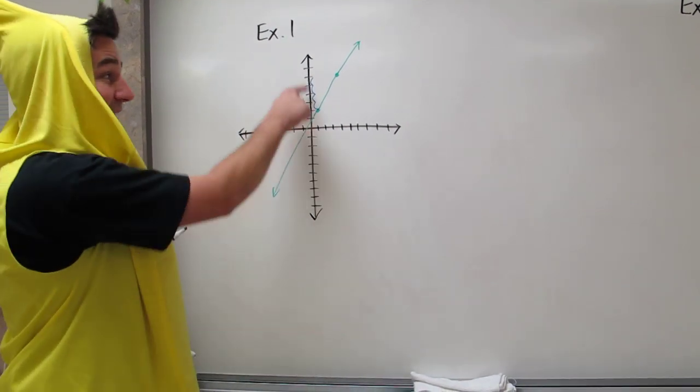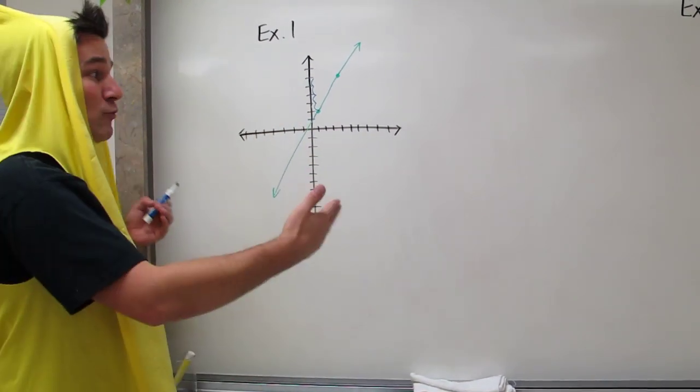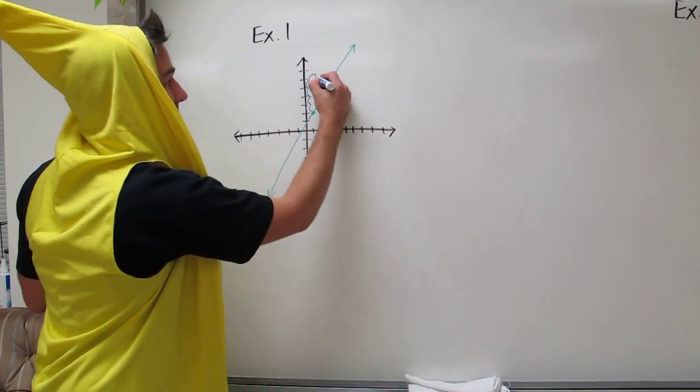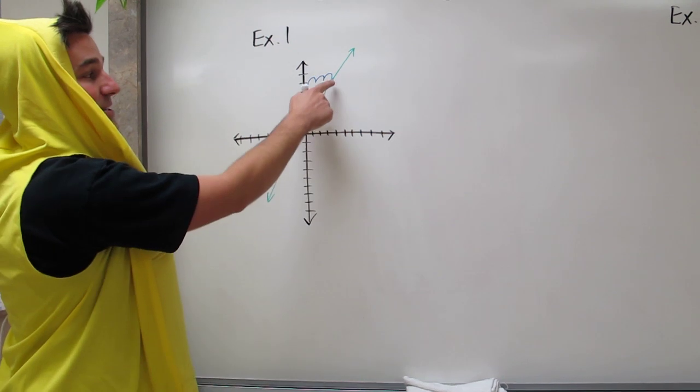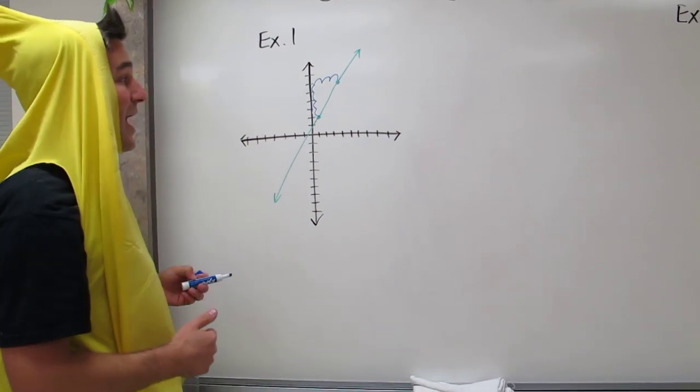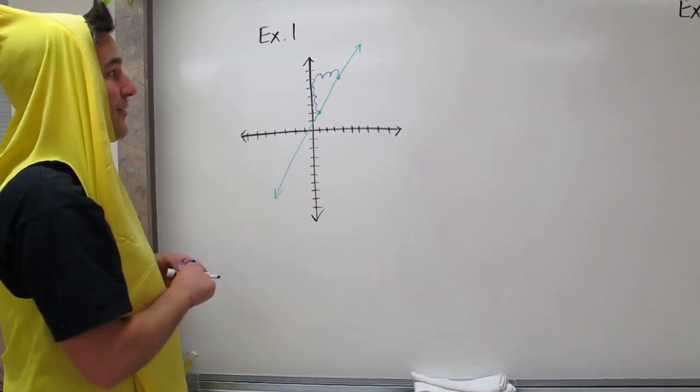Now, as we're going up 4, how much do we run? It looks like 1, 2, 3. So to get from this point to this point on the line, we have to rise 4 and run 3.